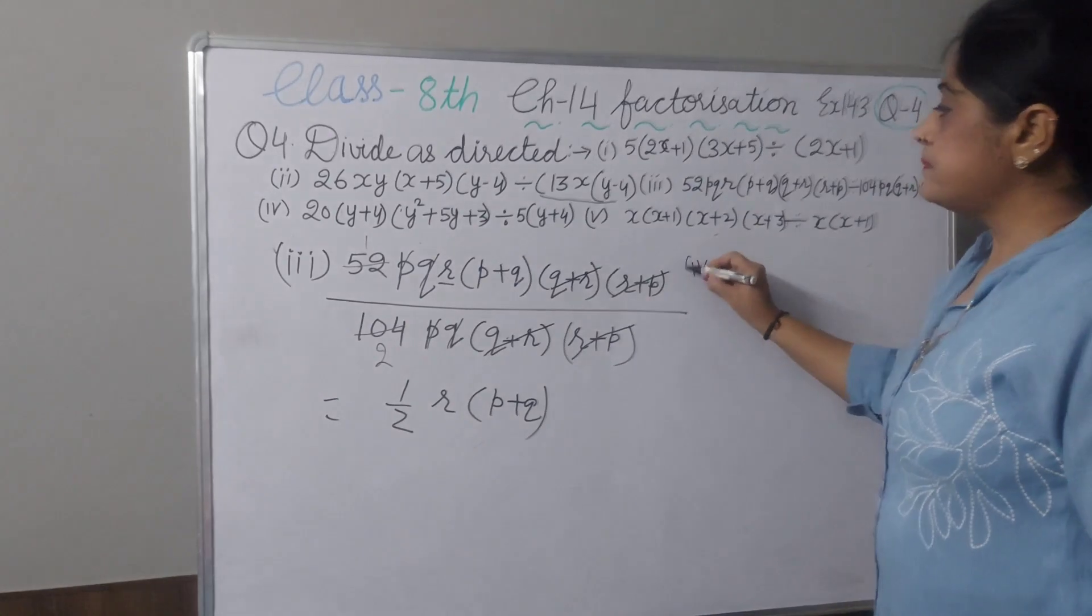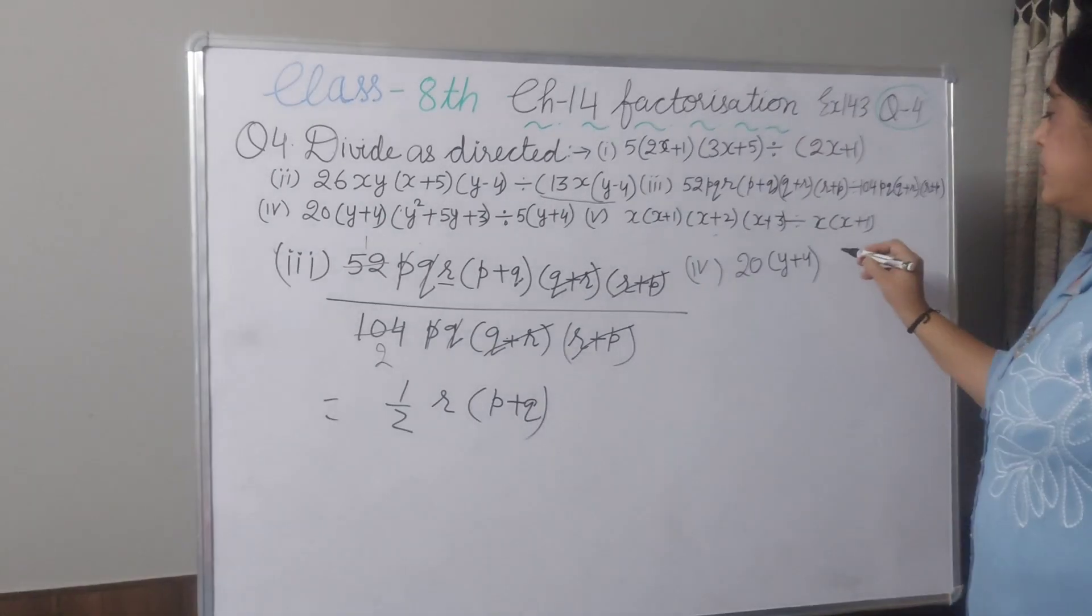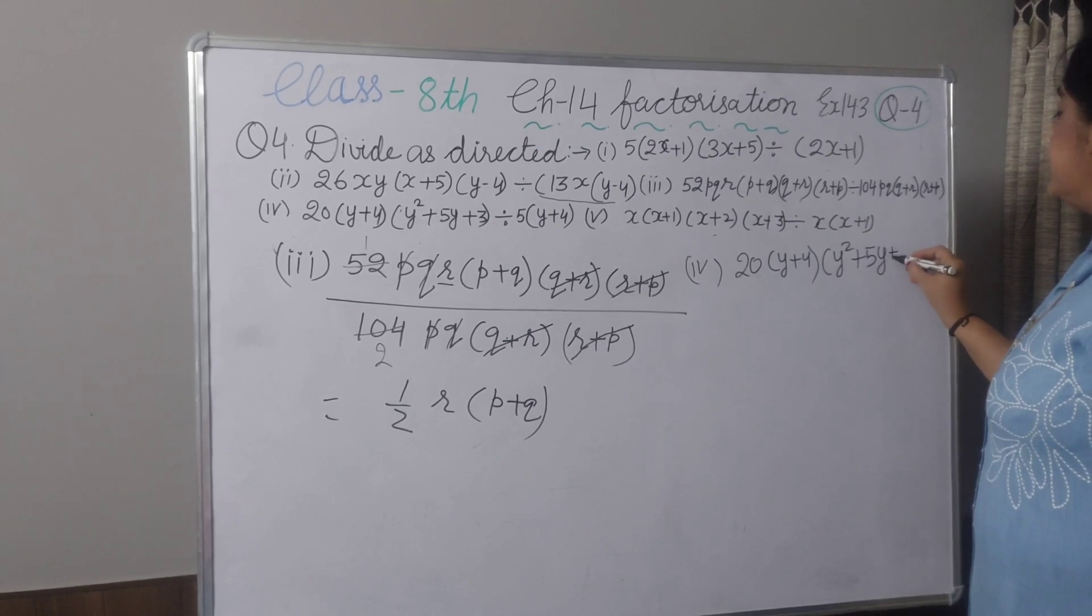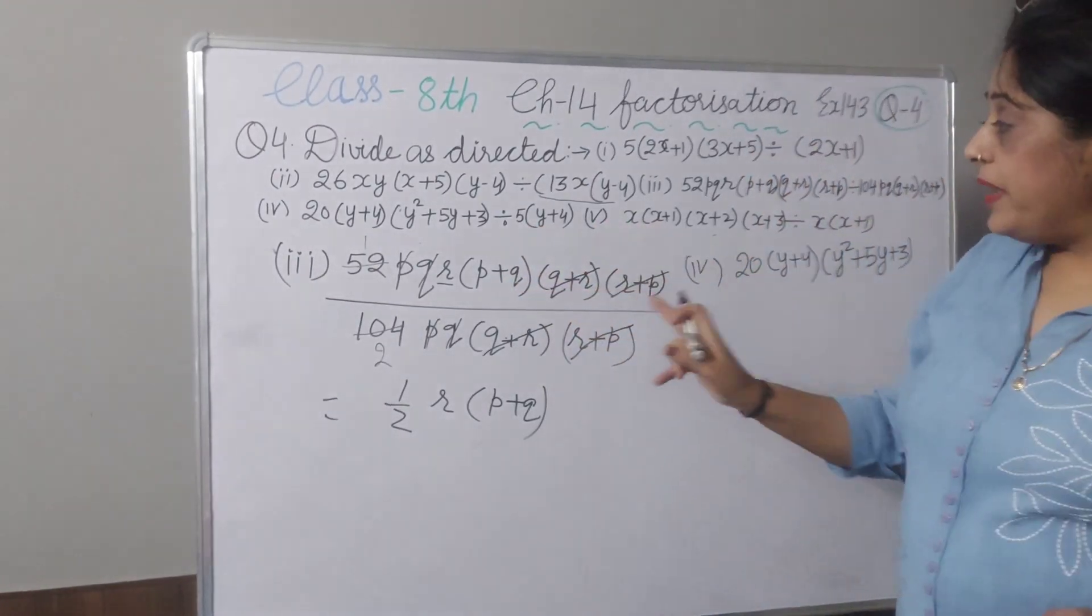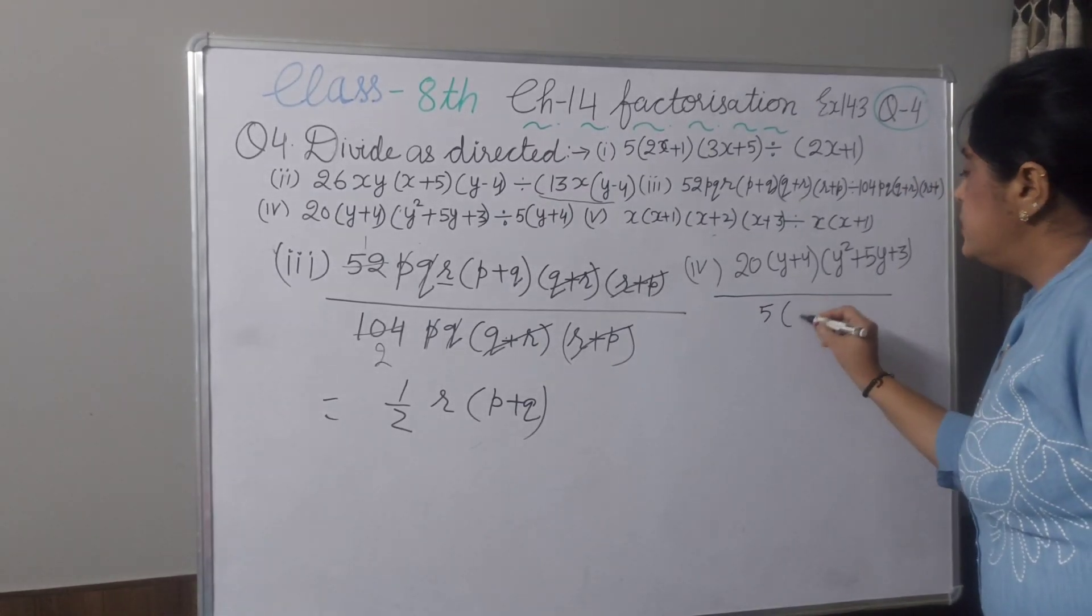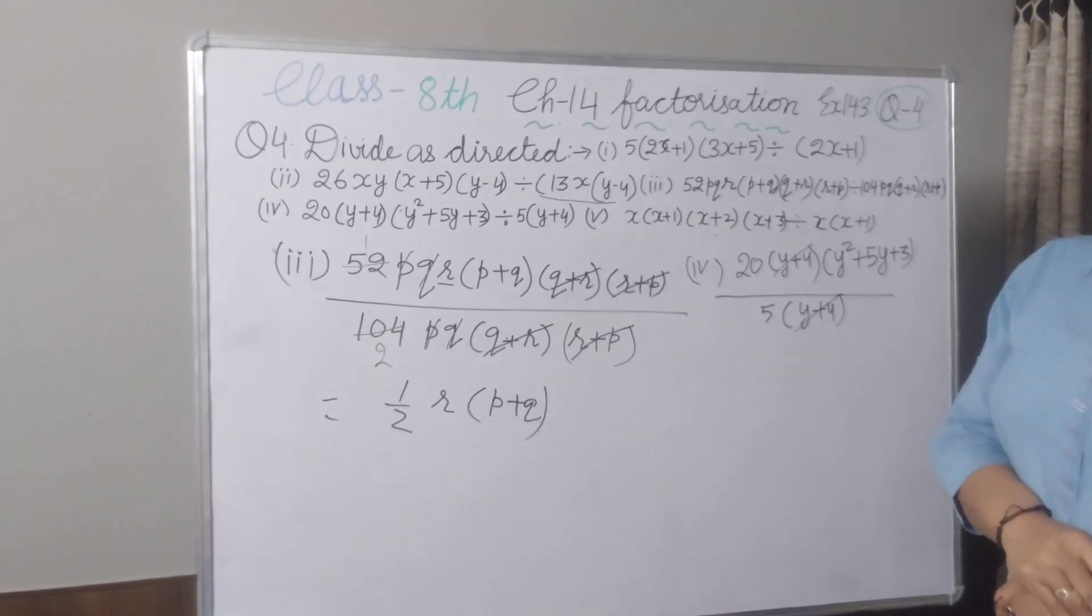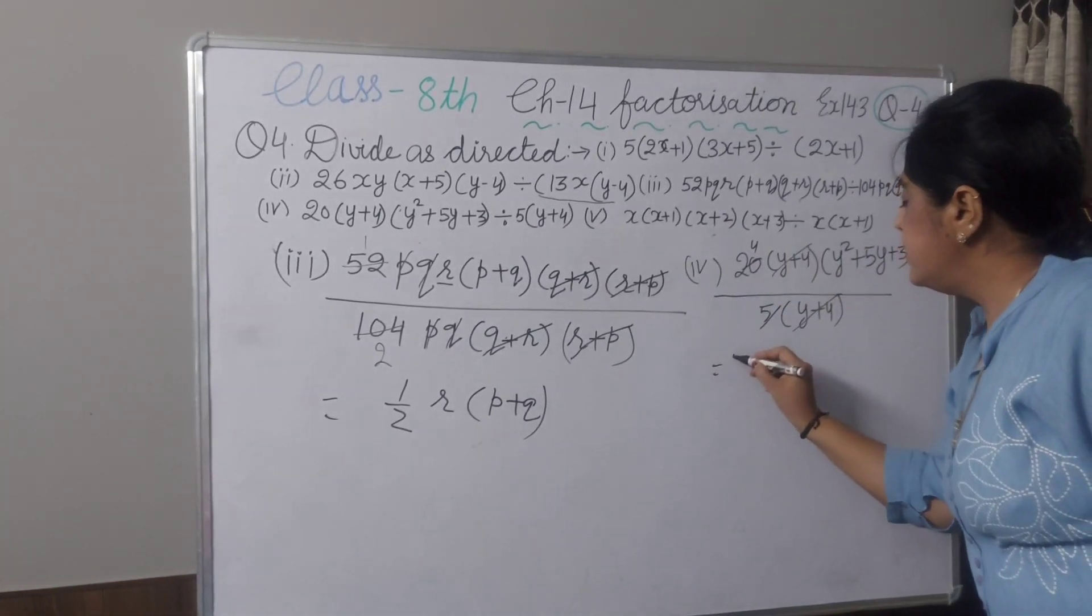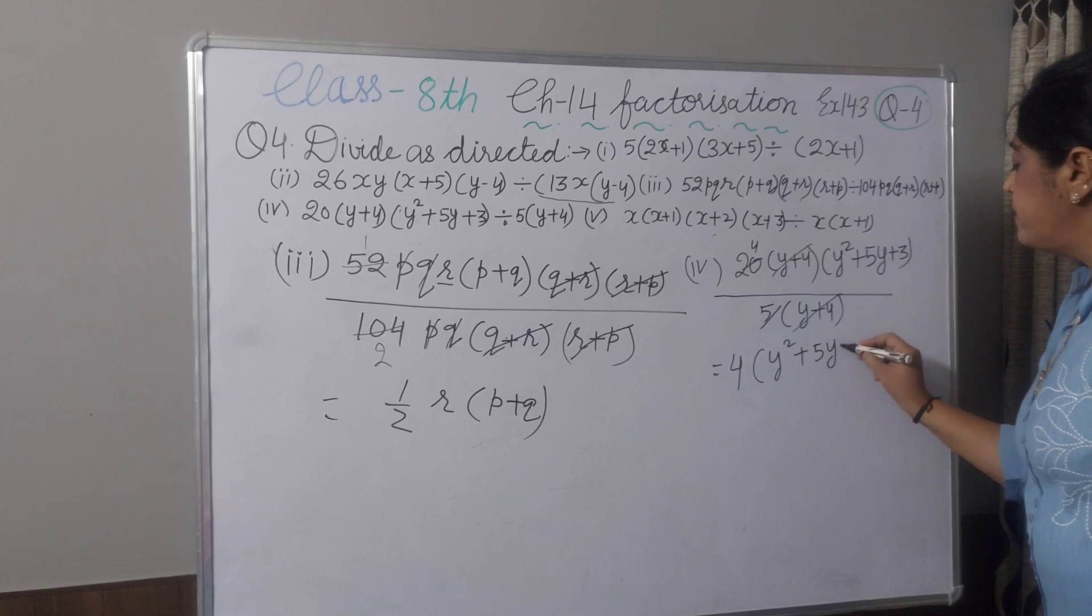Now, fourth part. 20 into y plus 4 into y square plus 5y plus 3, and you have to divide with 5 into y plus 4. 5 into y plus 4 I will write as a denominator. y plus 4 and y plus 4 you can cancel. These are in product and in binomial form. And 5 goes into 20. Your answer will be 4 into y square plus 5y plus 3.